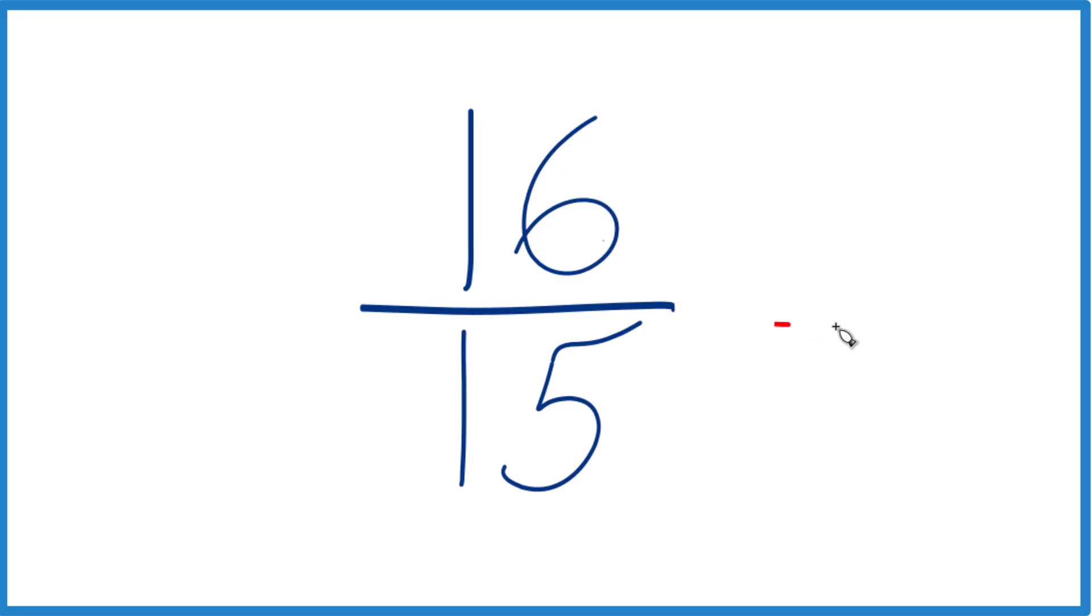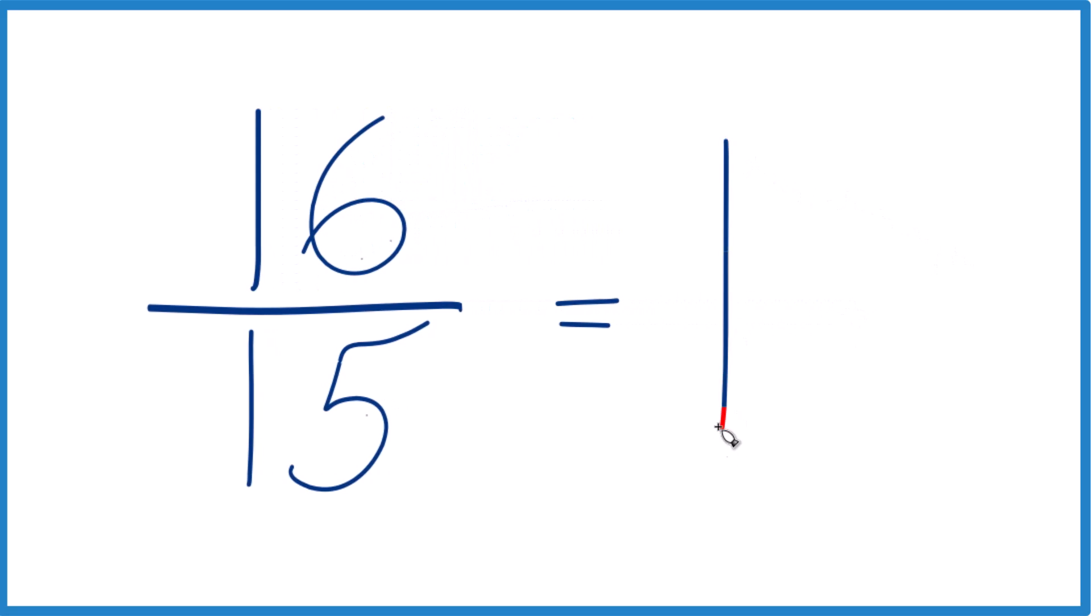Let's write it as a mixed number. So 15 goes into 16. We could say 1 times 15. That's 15. We'd have 1 left over and then we just bring the 15 across here and that's it.